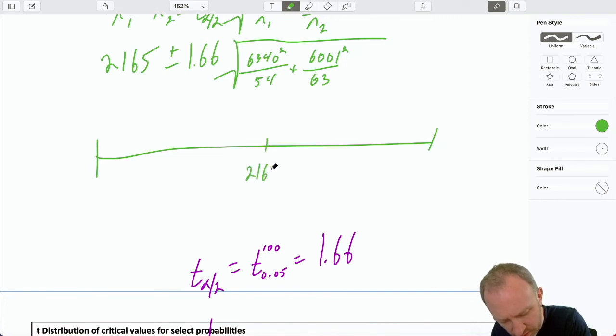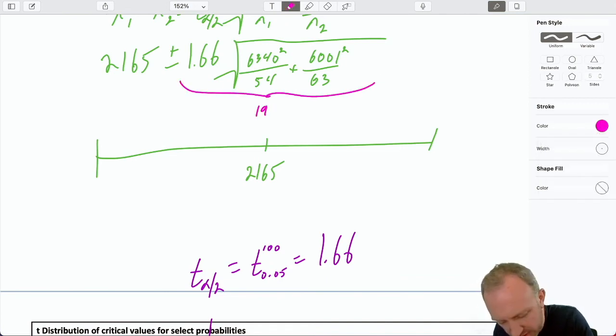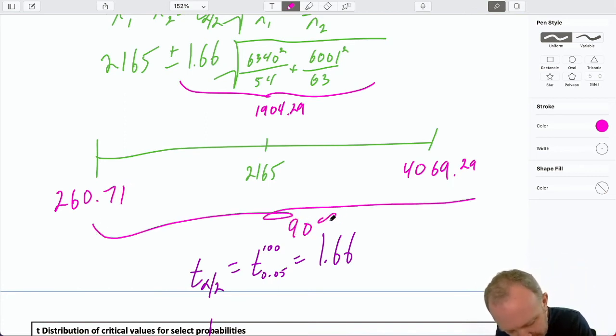So let's calculate that margin of error first. 1.66 times that square root of 6,340 squared over 54 plus 6,001 squared over 63. So that margin of error, of course, that's this term here is 1,904.29. So I add that to that point estimate. Here I have 4,069.29 and I subtract it and I have 260.71. So there's that corresponding 90% confidence interval.